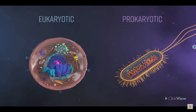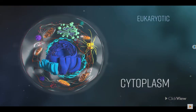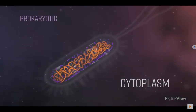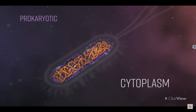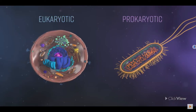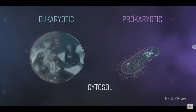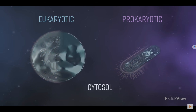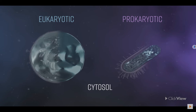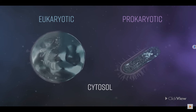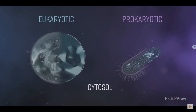Both types also contain cytoplasm. In eukaryotic cells, it is defined as everything within the cell outside of the nucleus. In prokaryotic cells, the cytoplasm refers to everything contained inside the cell membrane. The gel-like cytosol is a major part of the cytoplasm in both types of cell, and is the site of many of the cell's metabolic processes, such as the synthesis of protein.